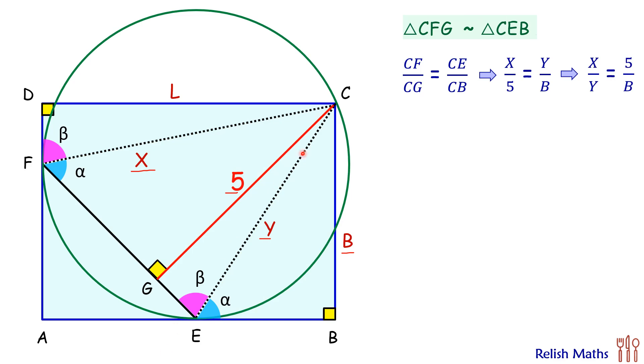Same way, if you look at triangle CGE and triangle CDF, we have got angle beta and both are 90 degrees. So by angle-angle similarity the triangles are similar and thus ratio of corresponding sides will be equal. Putting the values here, CG is 5 and CE is Y, and this is L and X.